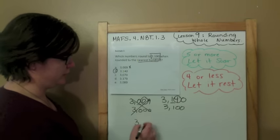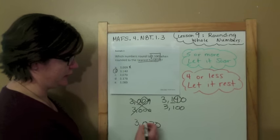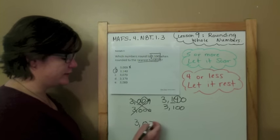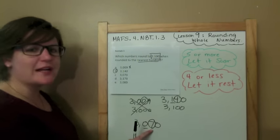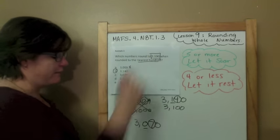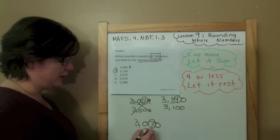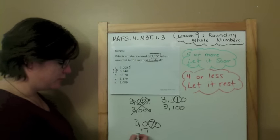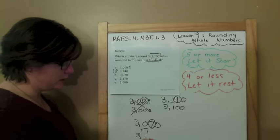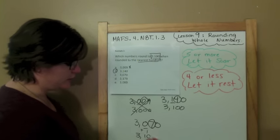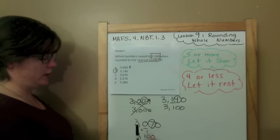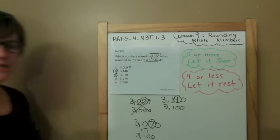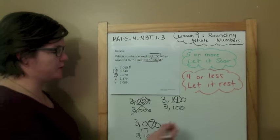I'm going to do 3,070. Rounding to the nearest hundred. When you round, underline the place. Spotlight to the right — decide the digit's fate. Five or more, let it soar, and add one to the rounding place. Bring the three down and the one, and everything else becomes zeros. That's what I needed. B and C right now, but there might be more, so let's check.